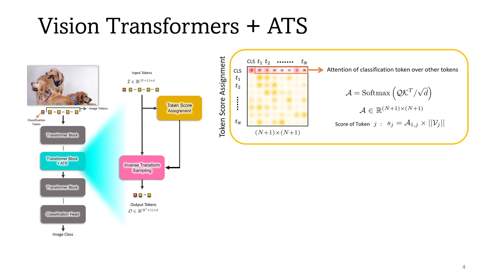The token score assignment step is simple yet very efficient. Here you can see the attention matrix A. We know that the first row of the attention matrix represents the attention weights of the classification token. Since the final prediction is performed only based on this token, we believe that these scores can be used as significance scores, because they represent how other tokens are contributing to the classification token, or in other words, how other tokens are contributing to the final prediction.